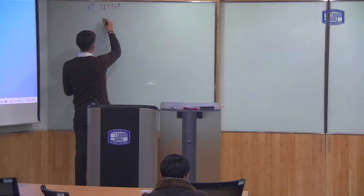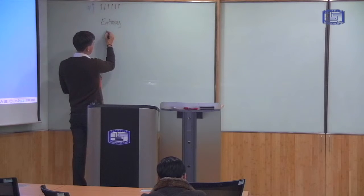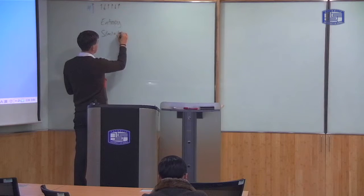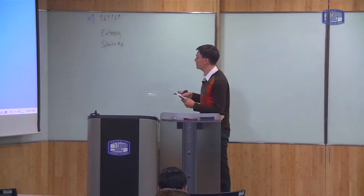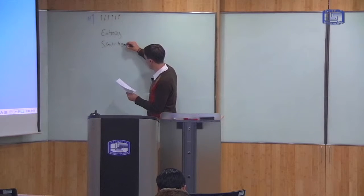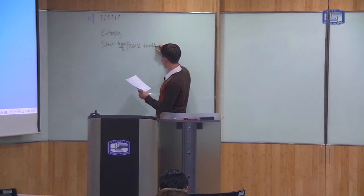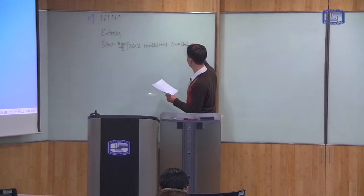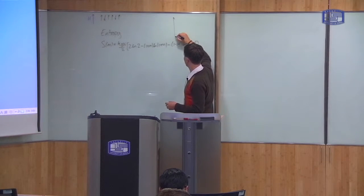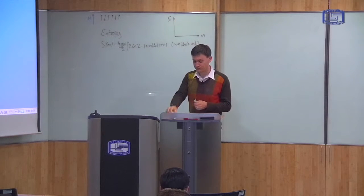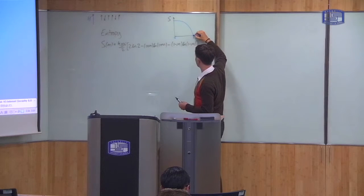Last time we calculated the entropy of this system, which depends only upon the magnetization. Entropy is defined as the Boltzmann constant times the log of the number of ways of arranging the system with that magnetization. This turns out to be kB*N/2 times (2 log 2 minus (1+m) log(1+m) minus (1-m) log(1-m)). We can plot entropy as a function of magnetization: it's highest when magnetization is 0, and goes to 0 when magnetization goes to 1.